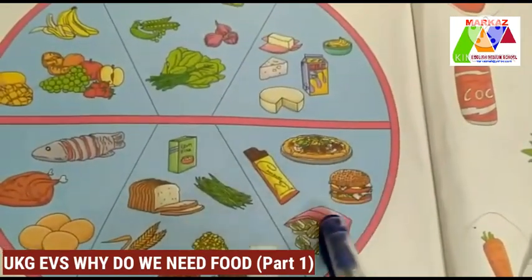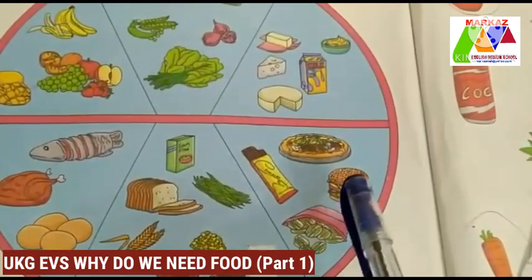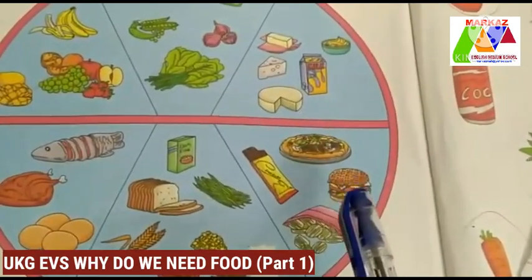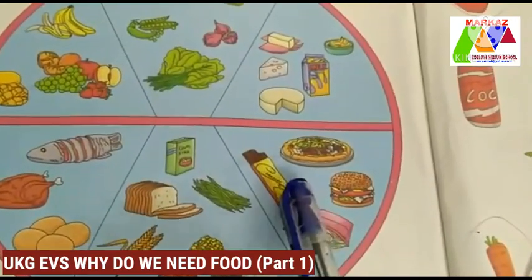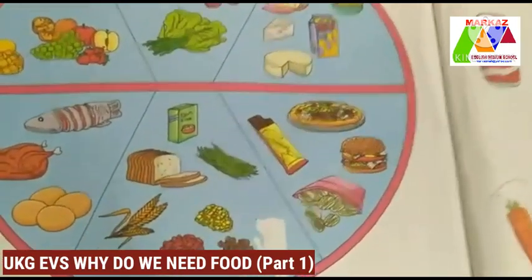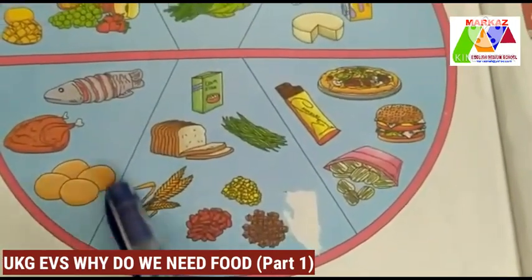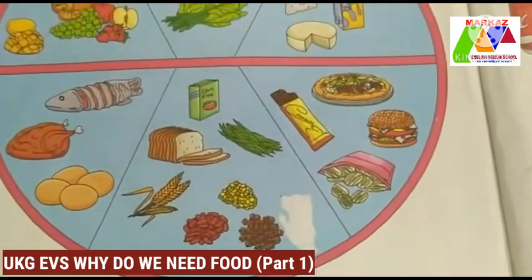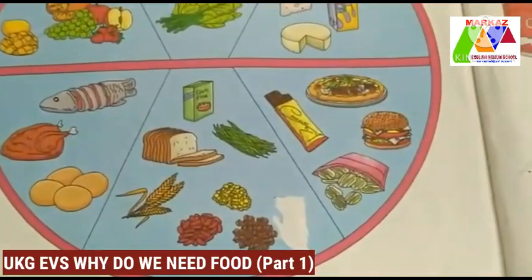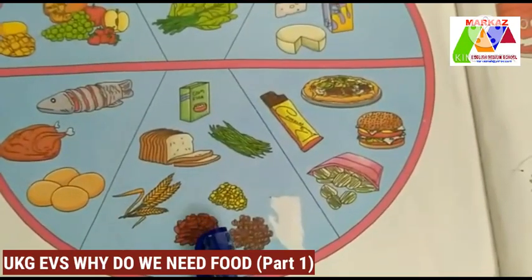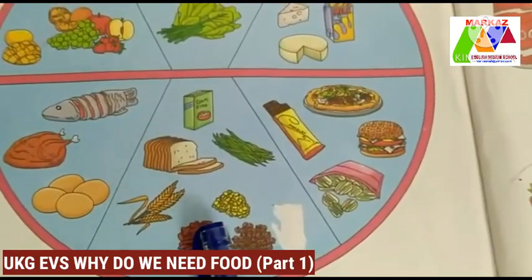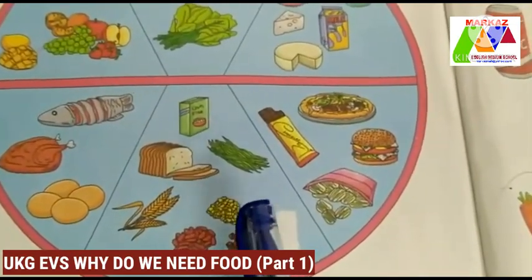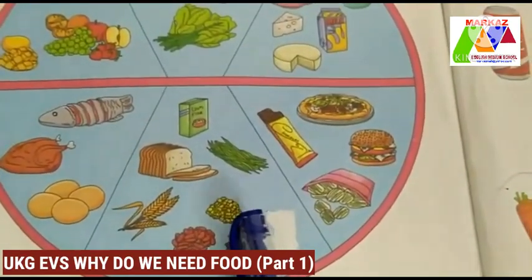These are some junk foods — pizzas, burgers, corn, chocolates, etc. These are some food grains: jowar, rajma, bajra, wheat, etc.